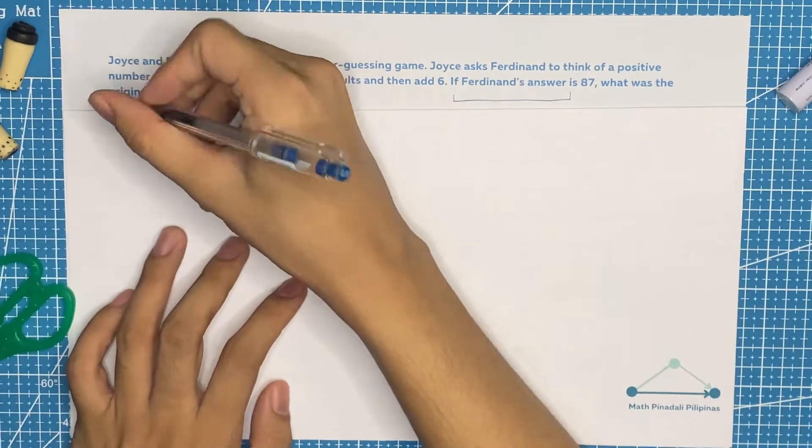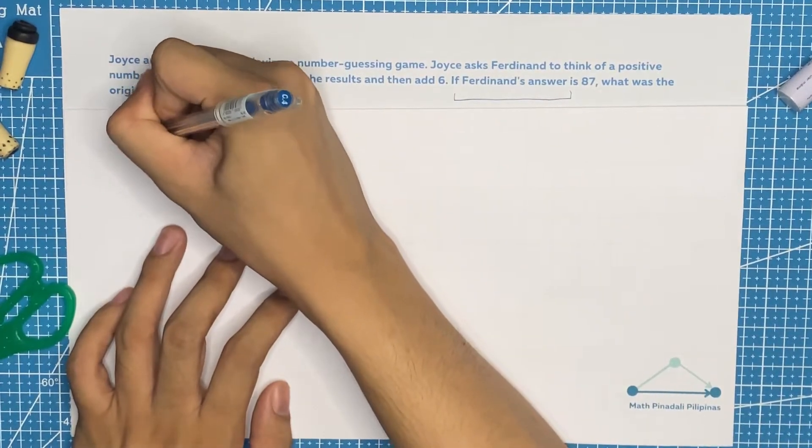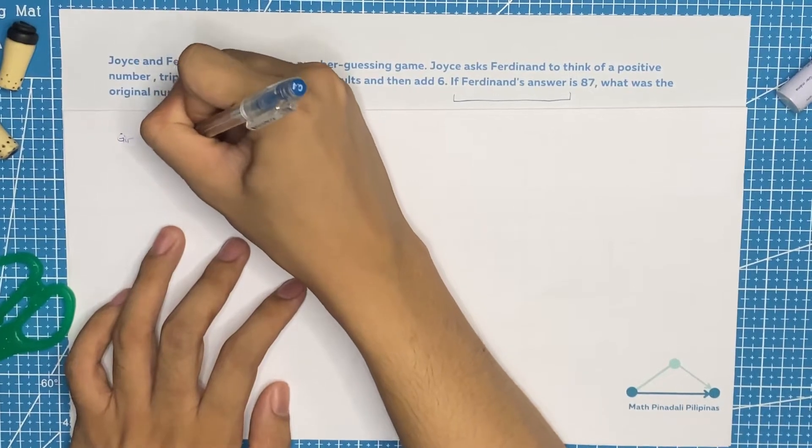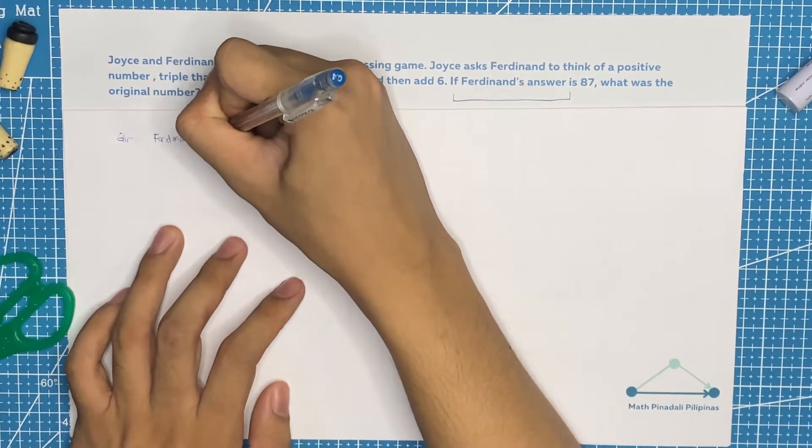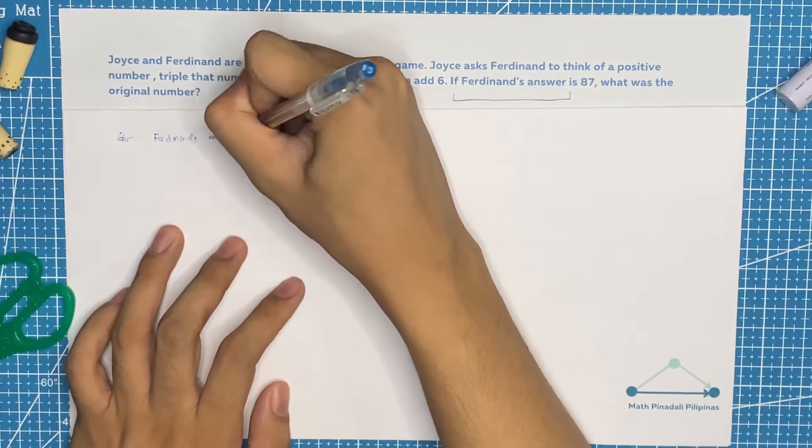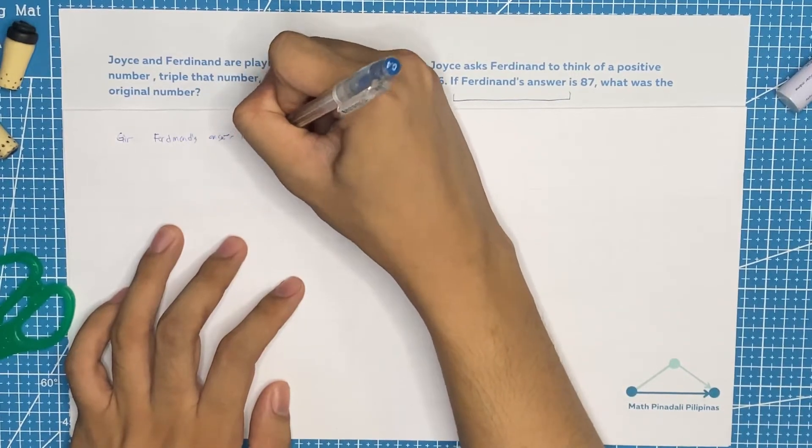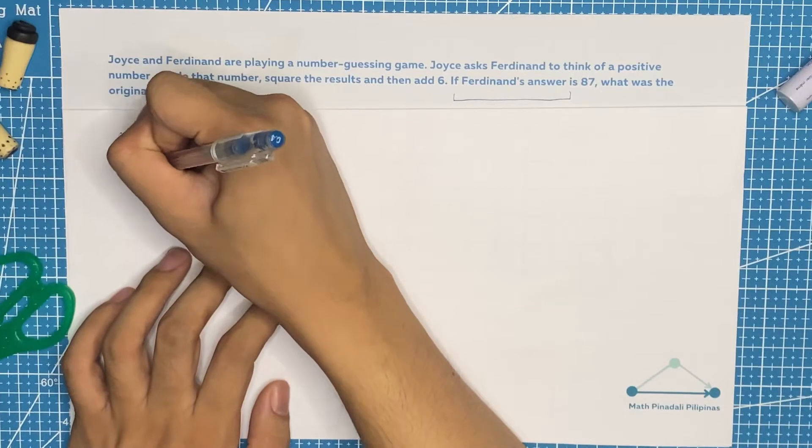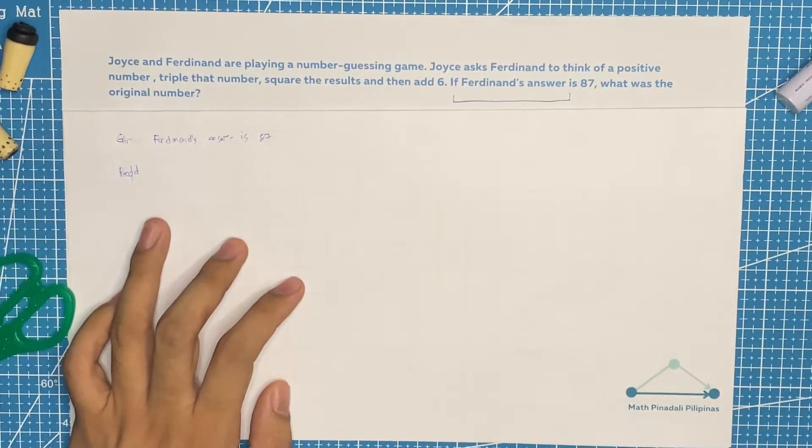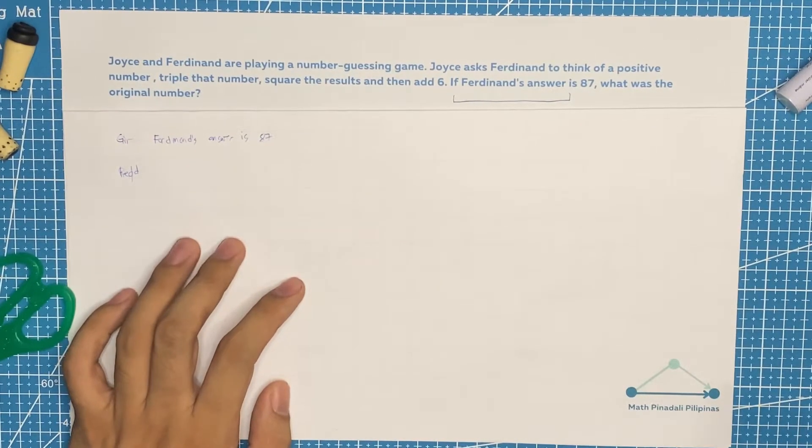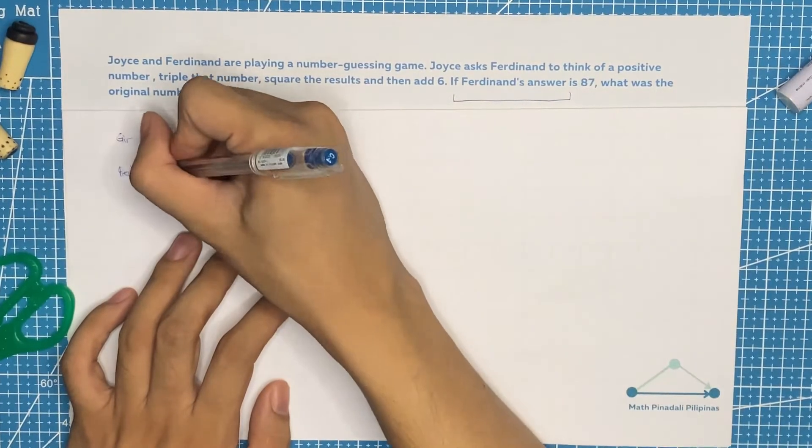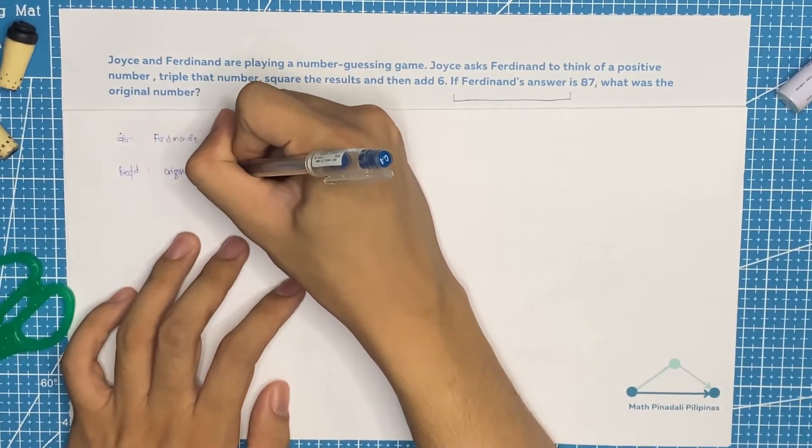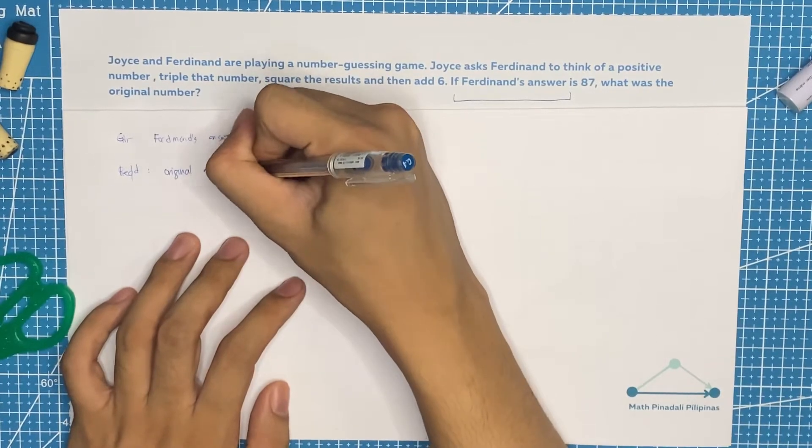For our given, let's write that Ferdinand's answer is 87. For required, we are required for the value of the original number.